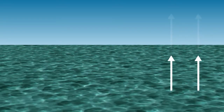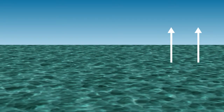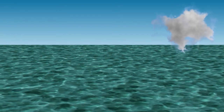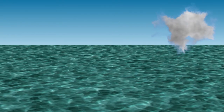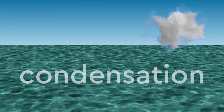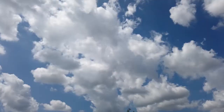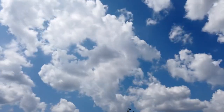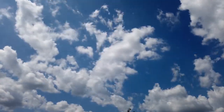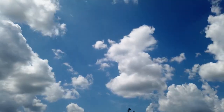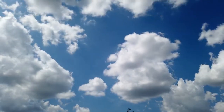Then water vapor goes up and forms clouds. This is called condensation. Clouds have many different types: cirrus, cumulus, stratus.